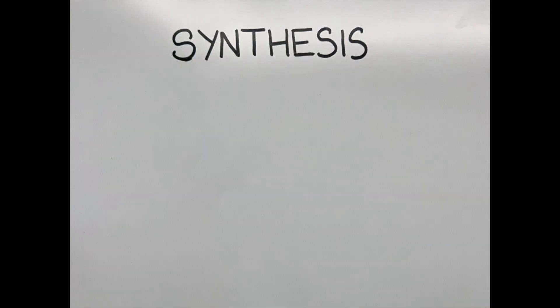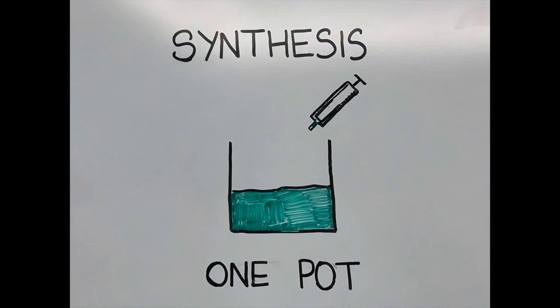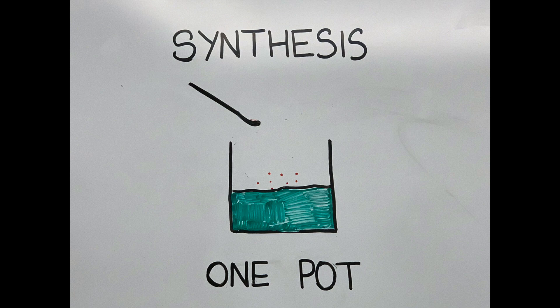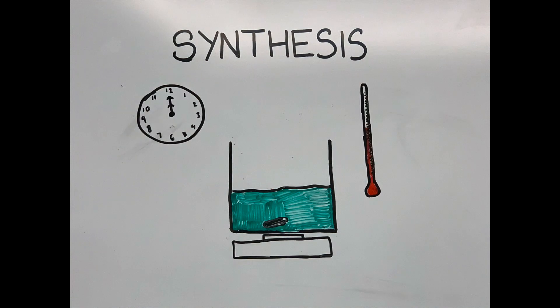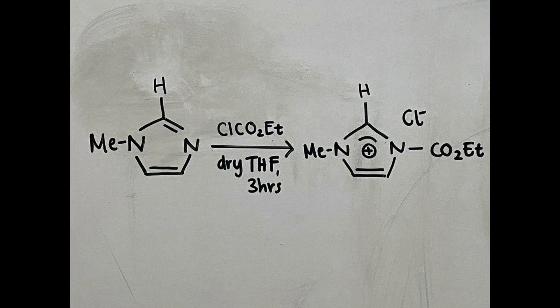Here's the method of synthesis for carbamazole, the carbine route, a one-pot synthesis. Ethyl chloroformate is added to 1-methylimidazole via syringe at 0 degrees, with distilled dried THF acting as a catalyst. The mixture is stirred for three hours and then cooled to zero degrees. The product formed is imidazolium salts.